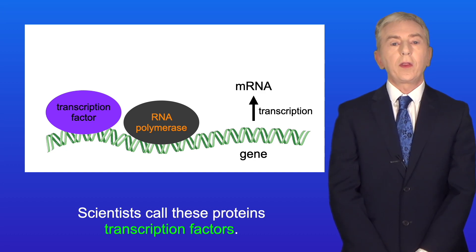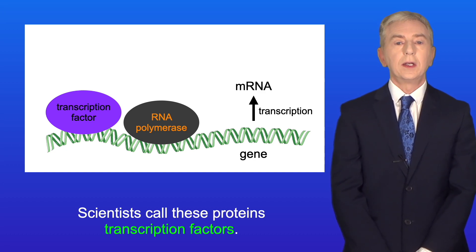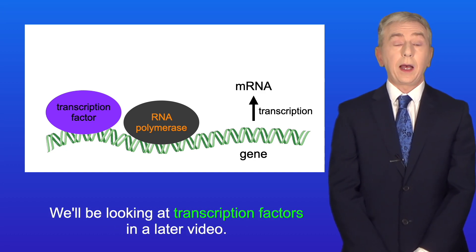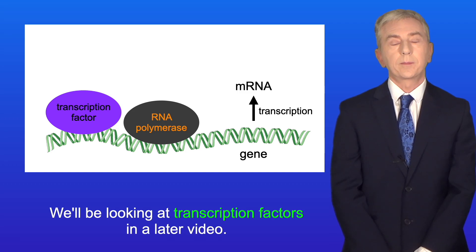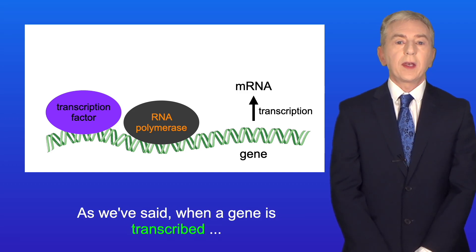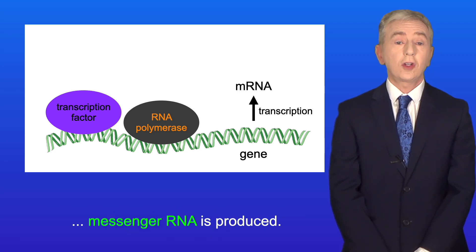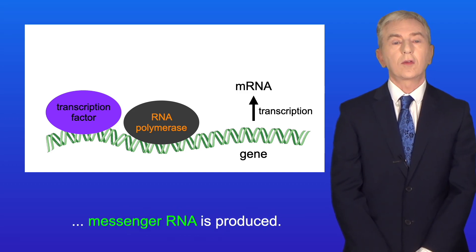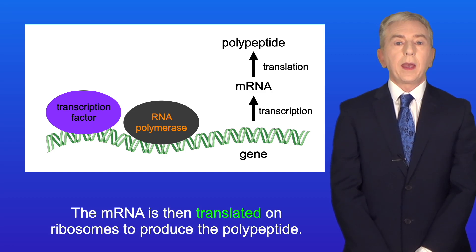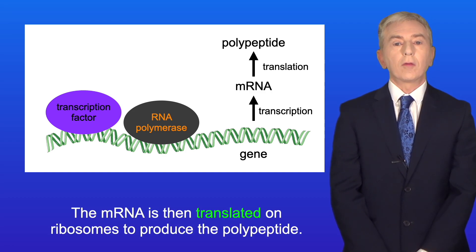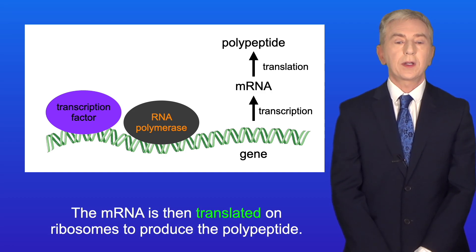Scientists call these proteins transcription factors, and we'll be looking at transcription factors in a later video. When a gene is transcribed, messenger RNA is produced, and the mRNA is then translated on ribosomes to produce the polypeptide.